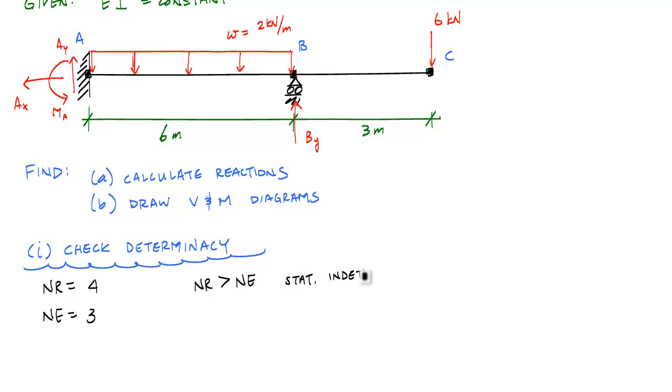What's more is that the difference between the number of reactions and the number of equilibrium equations is 1, or 4 minus 3 is 1, which means I have one redundancy. The redundancy means that I could, in theory, remove one of these reactions and it will still be determinate or the structure will still be stable. This also tells me that I'm statically indeterminate to the first degree.